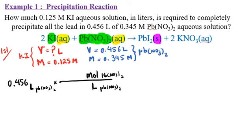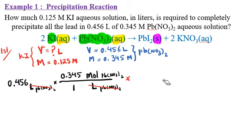Moles divided by volume in liters is called molarity. The molarity of Pb(NO₃)₂ is 0.345 mol/L. We multiply 0.456 L by 0.345 mol/L to get moles of Pb(NO₃)₂, canceling the liter units. Now we have moles of this substance and need to convert to moles of the other substance using the mole ratio from the balanced equation.